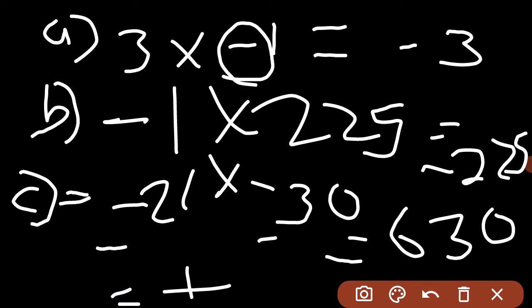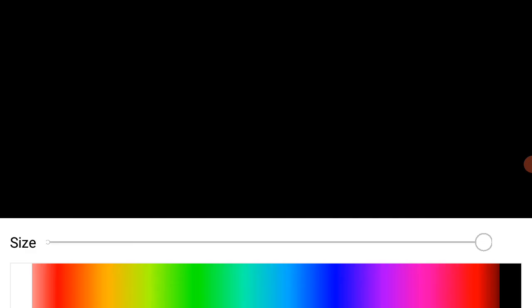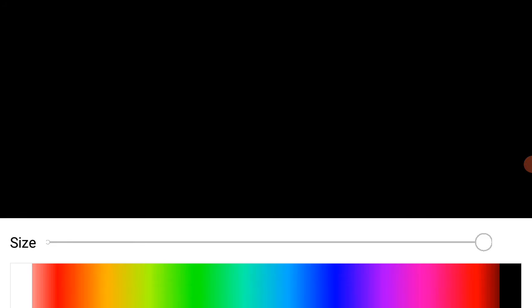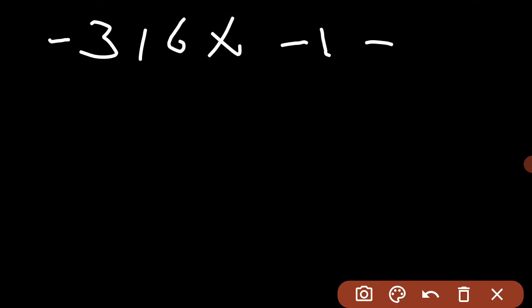Our next part is Part D. Part D is a simple part - I hope you can do it. It is minus 316 into minus 1, so it equals positive 316.